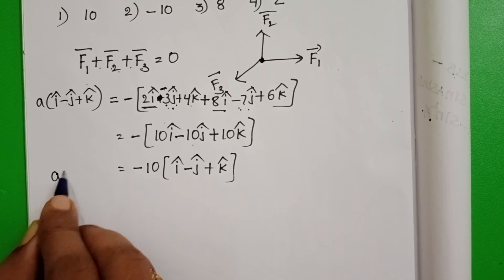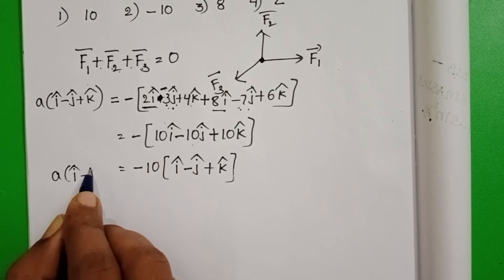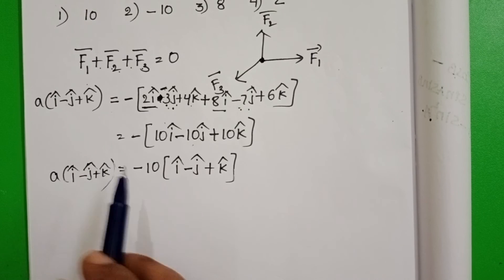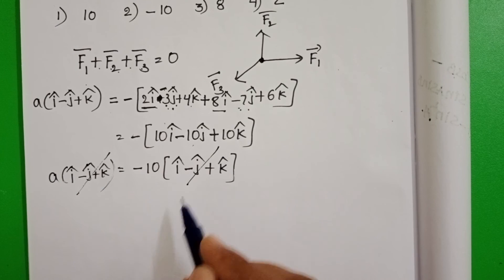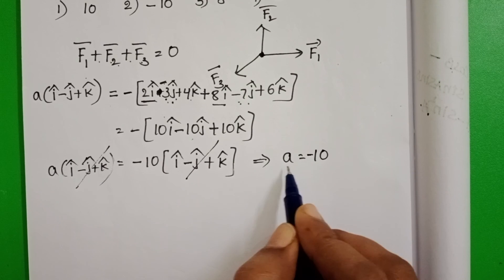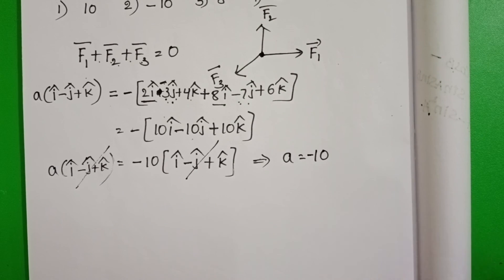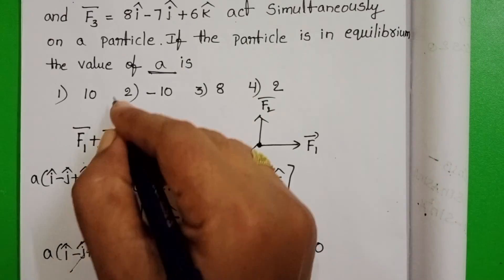On the left-hand side, A times (i cap minus j cap plus k cap). On both sides, i cap minus j cap plus k cap gets cancelled. Then the value of A is minus 10. The second option is correct.